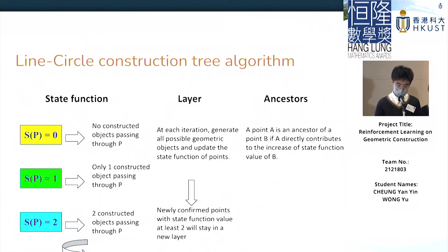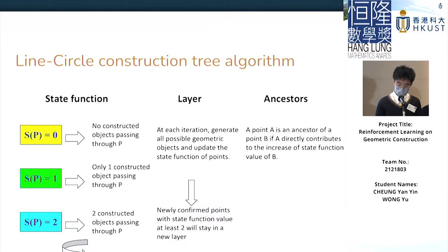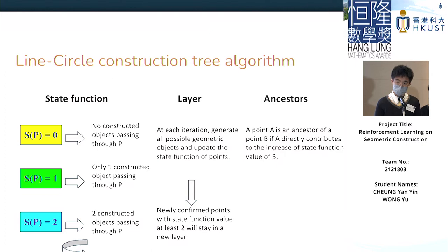To determine which points are important, we use the line-circle-constructing-tree algorithm, which we developed to check whether a point is useful and how it relates. We iterate through all possible actions and update which points are actually constructed at each step, repeating until all actions are done. We use a state function: if no object passes through the point, it's state zero; one object gives state one; state two or above means there's an intersection, making the point constructed. Through each iteration, newly discovered points are grouped into one layer.